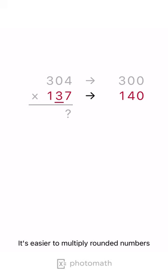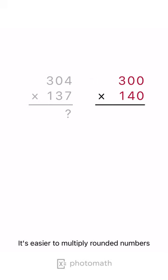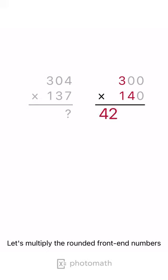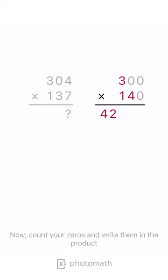It's easier to multiply rounded numbers. Let's multiply the rounded front-end numbers. Now, count your zeros and write them in the product.